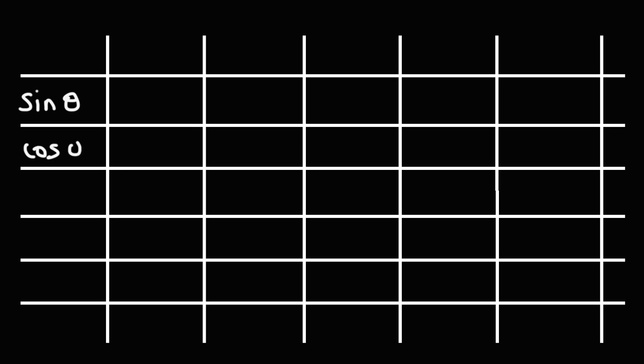The six common functions you need to be familiar with are sine theta, cosine theta, tangent, and then we have cosecant, which is the reciprocal of sine, and then secant theta, that's the reciprocal of cosine, and cotangent theta, which is the reciprocal of tangent.